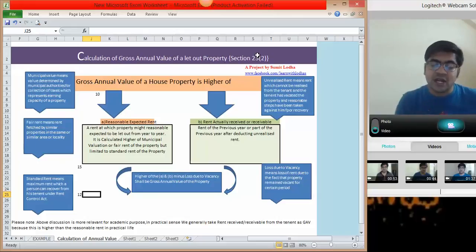Then, but limited to standard rent. The maximum rent which you can recover, in case you have some disputes with your tenant, which is given under the standard rent act. In this case, the reasonable expected rent would be 12 rupees.